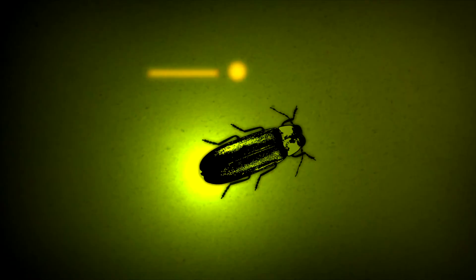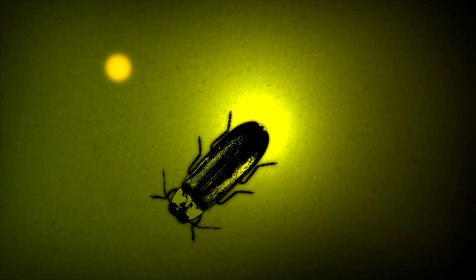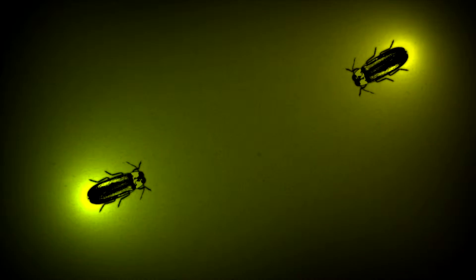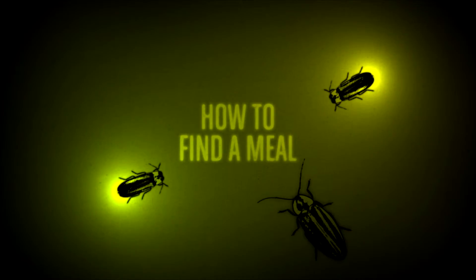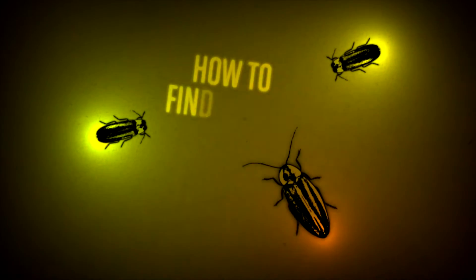Many species use a specific pattern of flashes to attract the opposite sex. Femme fatale fireflies exploit this behavior to solve another age-old problem: how to find a meal. Their solution?